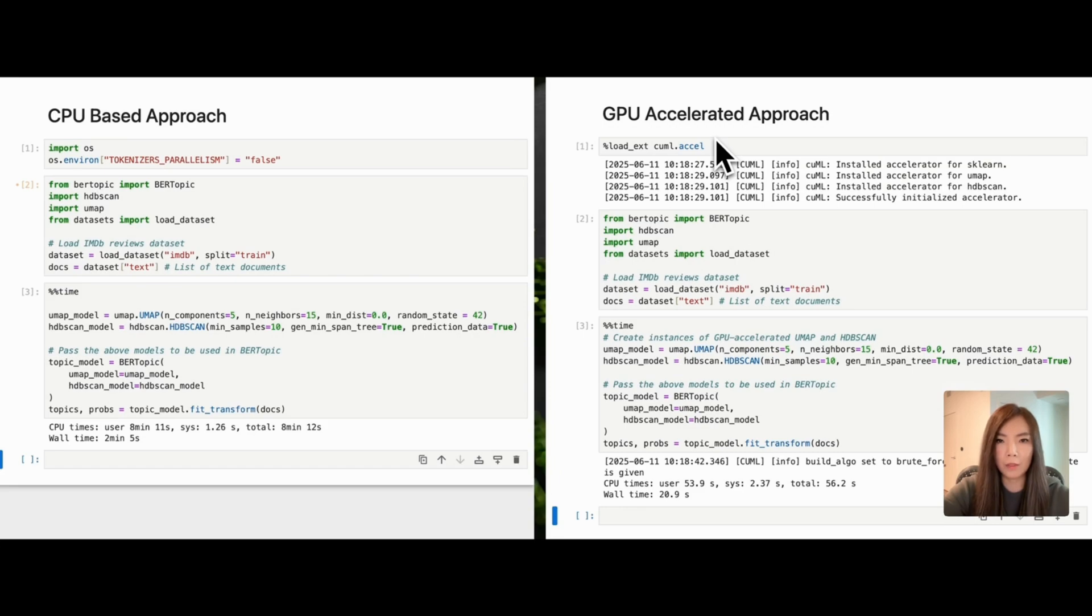NVIDIA's cuML's zero-code-change approach allows you to simply add a drop-in at the top, %load_ext cuml.excel, and the same algorithms can be GPU-accelerated without modifying your existing code. As you can see, the total execution time has been reduced from 8 minutes 12 seconds to 56.2 seconds.